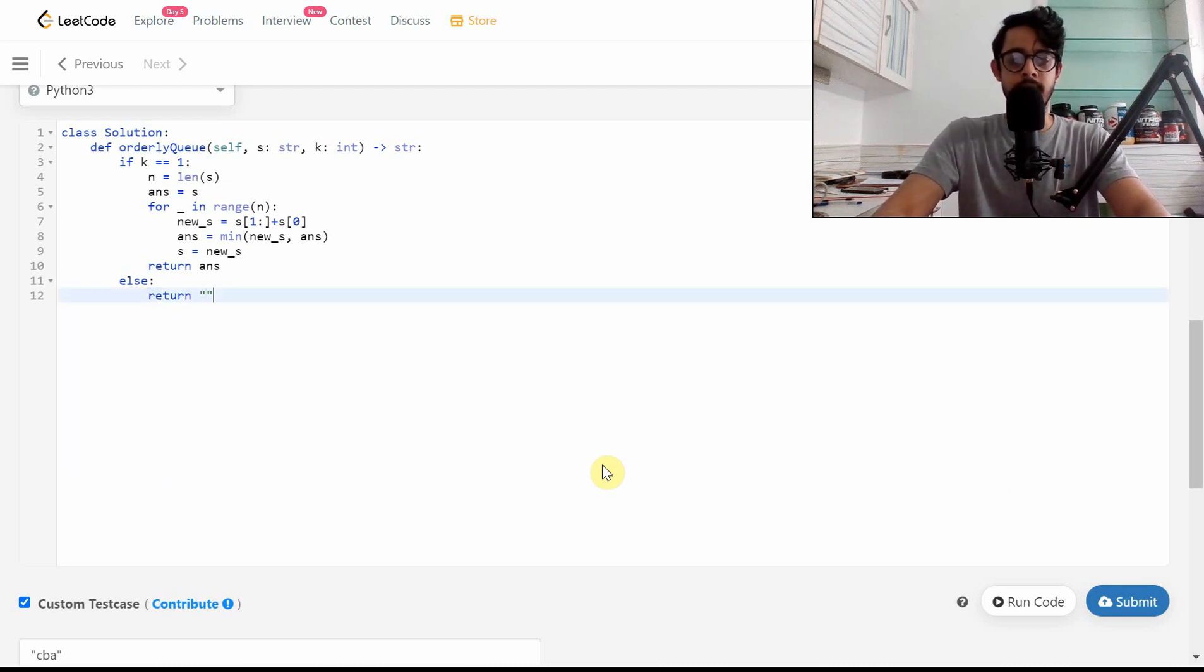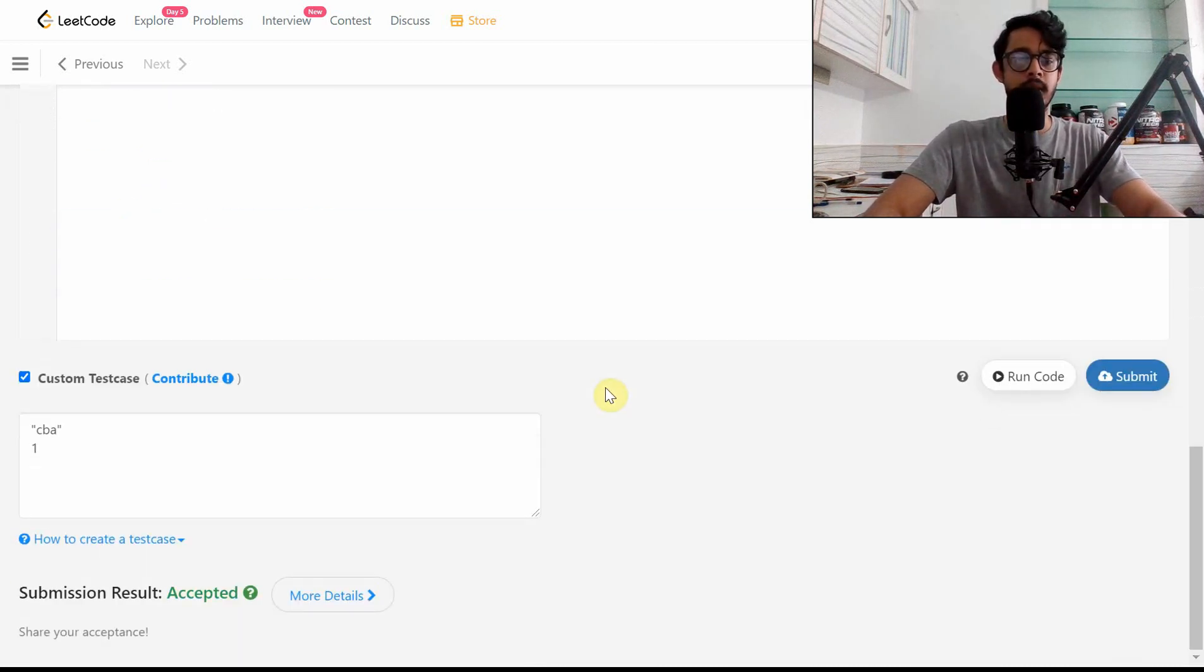So here we want to return string.join(sorted(s)). This sorted will actually produce a list of characters which are sorted in order, and you can join them all, and it will get us a string at the very end. And so we can submit this here and accept it.